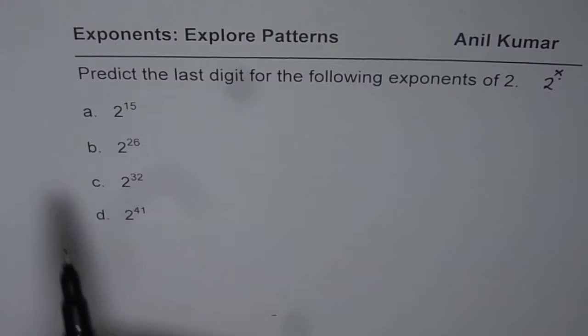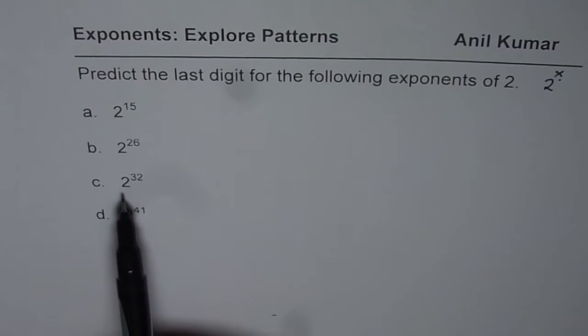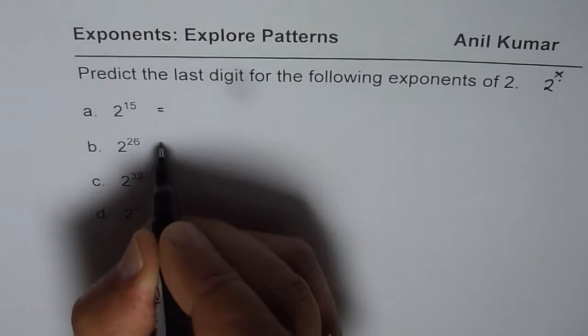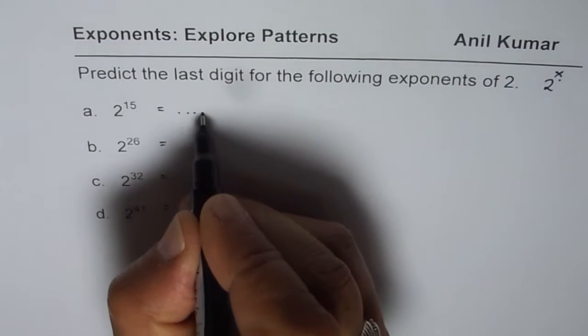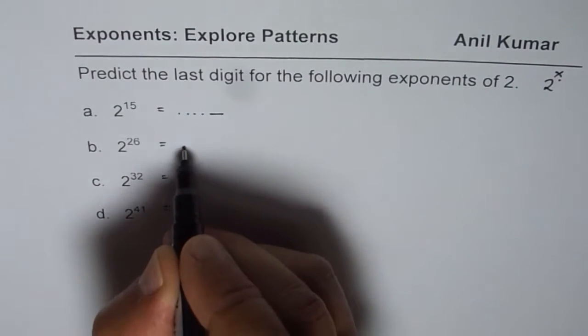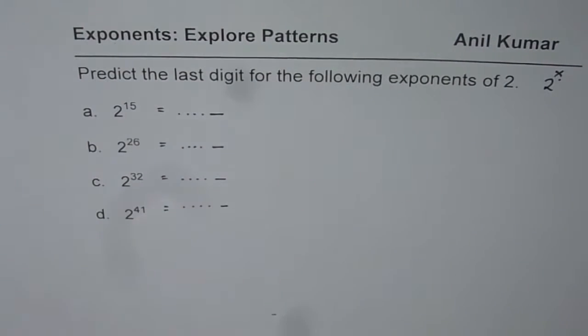What we are given here are four examples: 2 to the power of 15, 2 to the power of 26, 2 to the power of 32, and 2 to the power of 41. Now without using a calculator, you have to find what is going to be the last digit. Last digit is the 1's place. This is what we need to find.